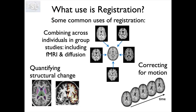Once we've done brain extraction we can do our registration of different images — either to each other, to a standard template, or across time. Registration is the second step we would do after brain extraction, and as mentioned it's used very commonly in all sorts of settings, so it's something you should be familiar with.